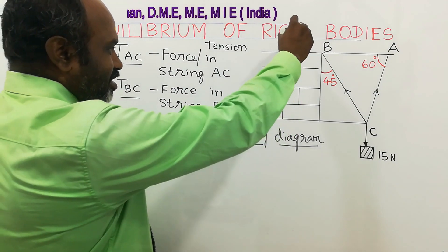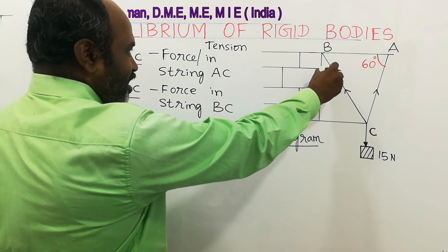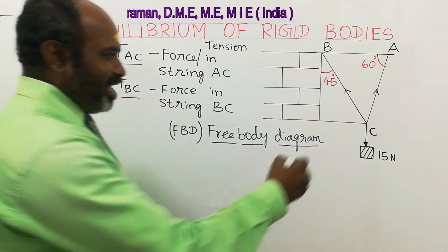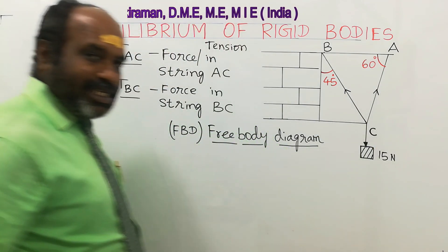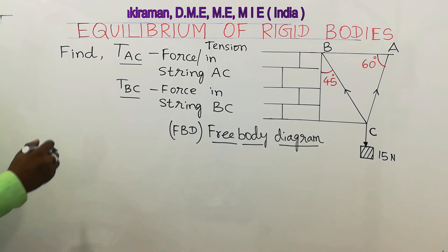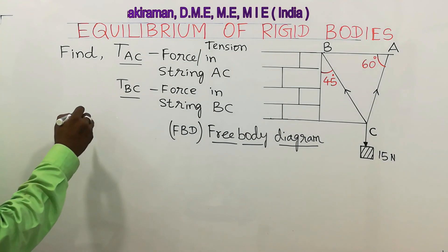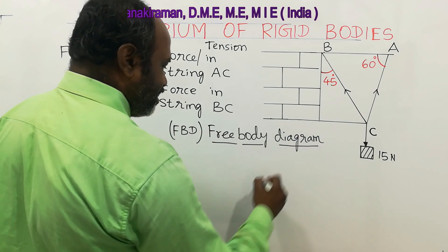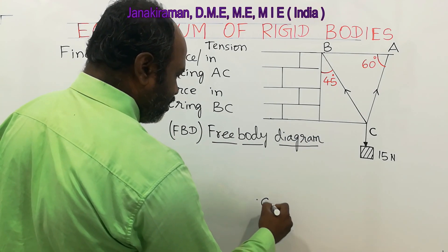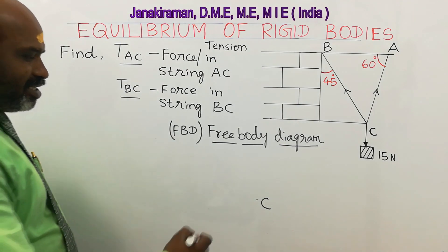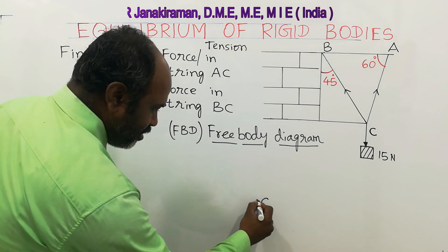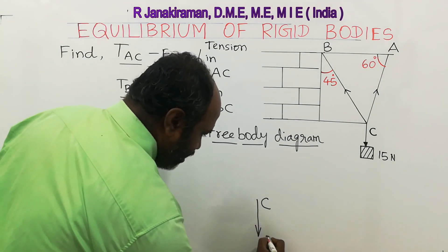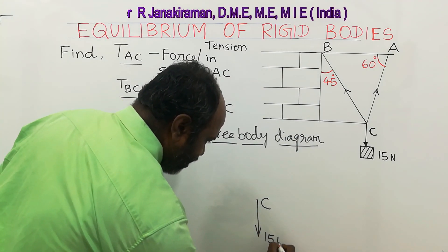Applying Lami's theorem — in the diagram there is a geometry property. The angle at point A is 45 degree, and the angle at point A is 60 degree, and the remaining angle is at point C. The free body diagram is considered at point C. Point C is where the suspended weight is acting downward, so we put the arrow mark — 15 Newton is acting downward.